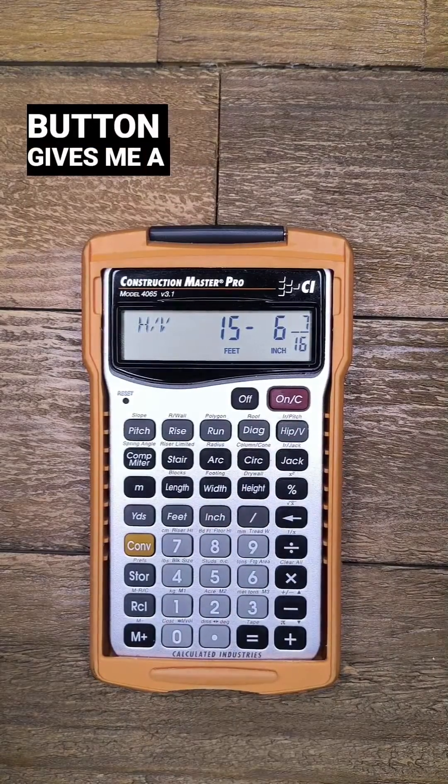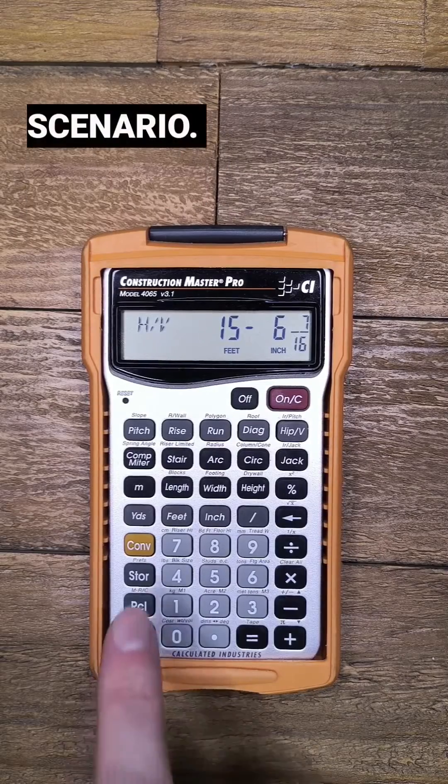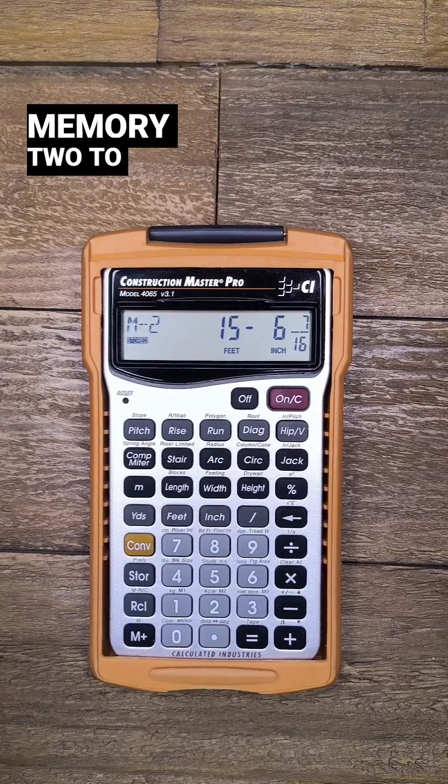Now the hip V button gives me a different length than earlier, but this is still not the right answer for this scenario, so I'll store this in memory 2 to compare later.